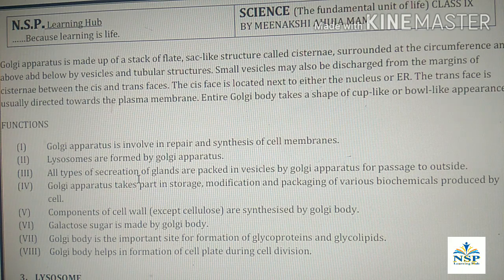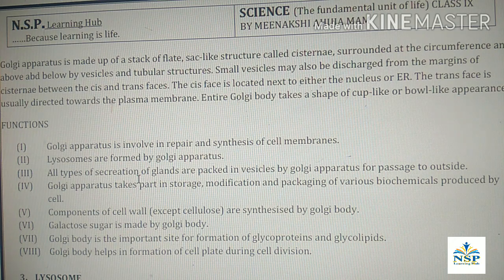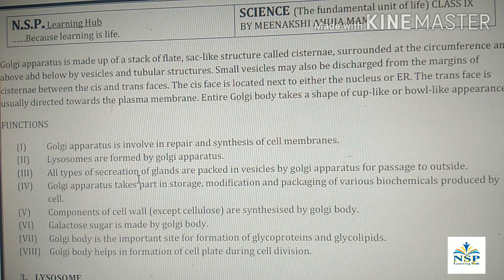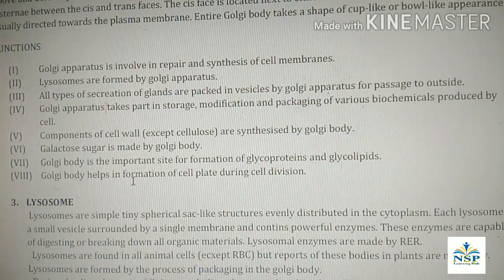Golgi apparatus is located next to either the nucleus or ER. The trans face is usually directed towards the plasma membrane, while the cis face is directed towards the nucleus or ER. The Golgi body takes a cup-like or bowl-like appearance. Functions of Golgi bodies: